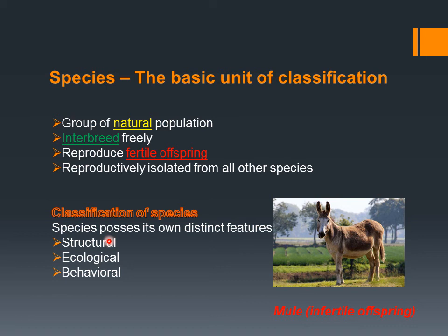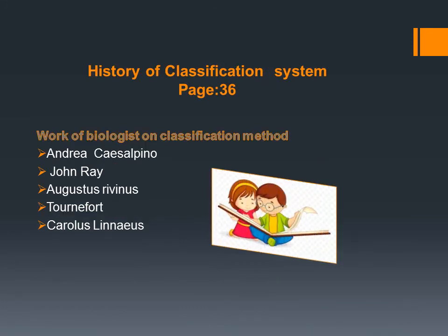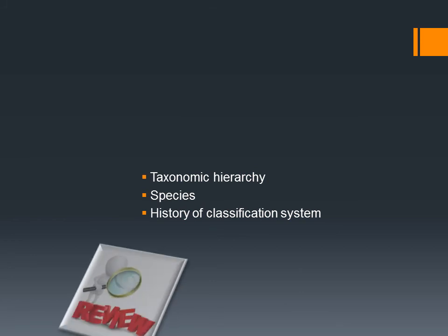Dear students, open your book to page number 36. Here you can read about the work of some biologists on the classification method, including the work of Andrea Cesalpino, John Ray, Augustus Rivinus, Tony Ford, and Carolus Linnaeus. The explanation of all these classification systems will be discussed in the next lecture.